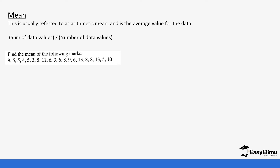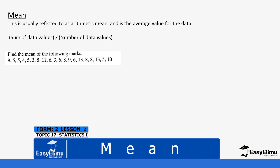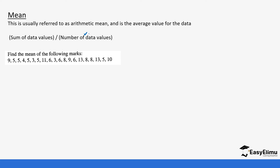For example, if you look at this data, we don't necessarily have to create the frequency distribution table, but we can do so to enable the calculation. We can also calculate the mean of this data without necessarily making the table. The first thing we need is the number of data values, as seen in the formula.